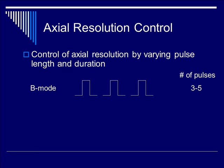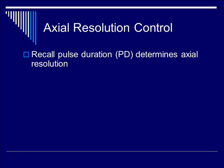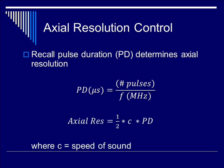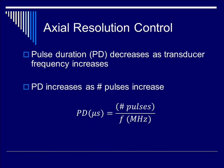In normal B-mode measurement, typically 3 to 5 pulses are used to initiate the transducer signal. However, in Doppler measurement, you typically need between 20 to 30 pulses. Recall that pulse duration determines axial resolution. Therefore, if you plug in the equation for pulse duration — which is the number of pulses divided by frequency — you can get the axial resolution, which is 1.5 times the speed of sound times pulse duration. Recall also that pulse duration decreases as transducer frequency increases, and if you increase the number of pulses, you also increase pulse duration.